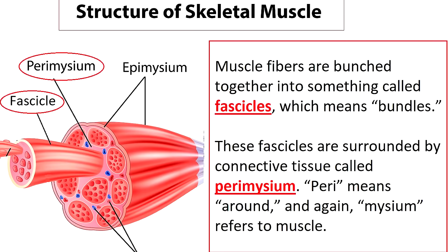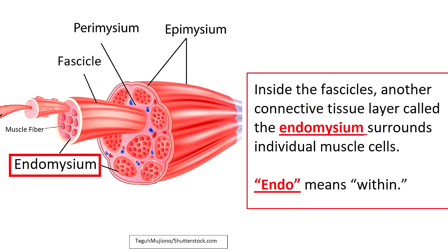Next, you'll notice that the muscle fibers are going to be bunched together into something called fascicles, which means bundles. These fascicles are going to be surrounded by connective tissue called perimysium. Peri means around, and again, mysium refers to the muscle. So the perimysium is around the fascicles that bundle up these individual muscle fibers. Now inside these fascicles, you will find another connective tissue layer called the endomysium, and this surrounds the individual muscle cells inside those fascicles. Endo simply means within, so that will help you remember that it surrounds the individual muscle fibers within the fascicle.